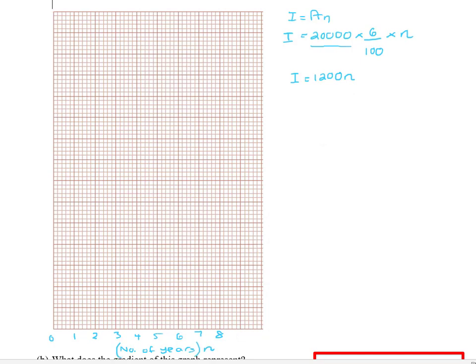And then this next one I'm going to go up in lots of 1,000. So 1,000, 2,000 and so on. And I should label this side as well. I'm going to call that interest. And I'm going to label it i.